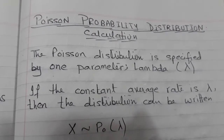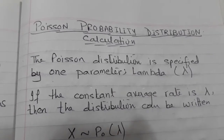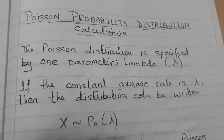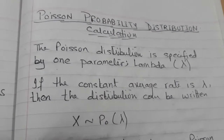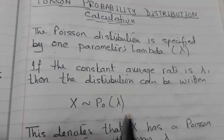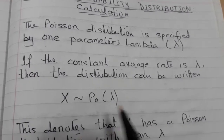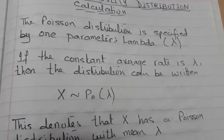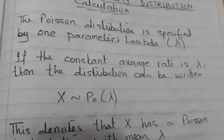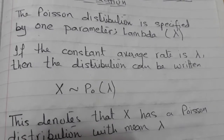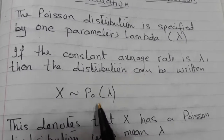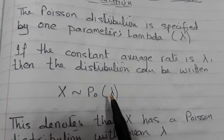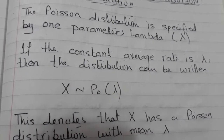Now let's see the first syllabus point: how to calculate the Poisson probability distribution. For any distribution there are parameters, and for Poisson distribution only one parameter is used: lambda. If the constant average rate is lambda, then the distribution is written as X ~ Po(λ). For example, if I am talking about the number of goals in 30 minutes and on average one goal occurs, then lambda equals 1. If the question asks about one hour, then lambda becomes 2 — it is very important to adjust lambda according to the time interval given in the question.